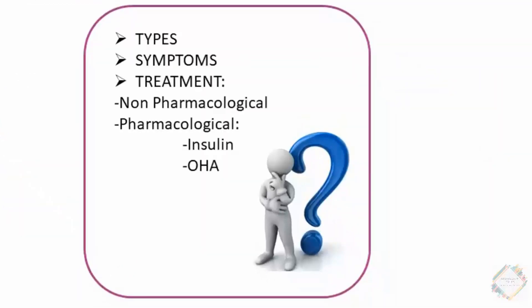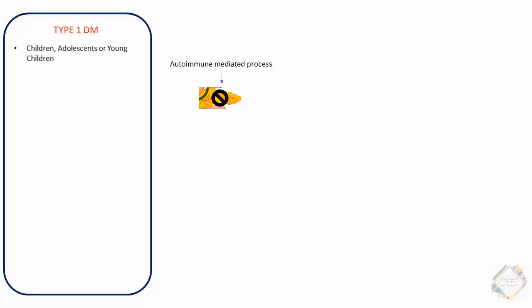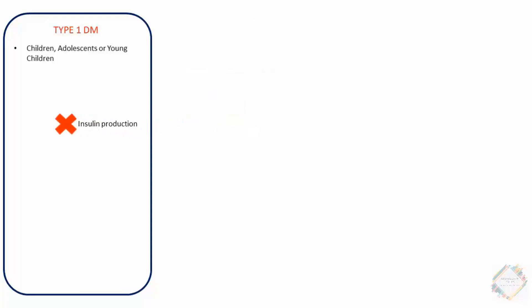Type 1 Diabetes Mellitus is most commonly seen in children, adolescents, or young people. The main cause is an autoimmune-mediated process that leads to destruction of the pancreas or the islets of Langerhans cells, resulting in no production of insulin. These autoimmune processes are usually triggered by a virus or environmental toxins.